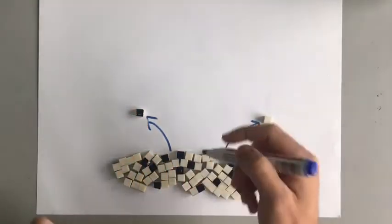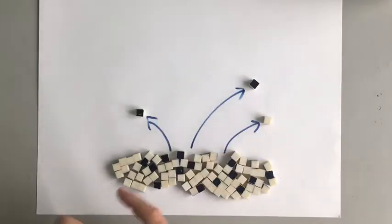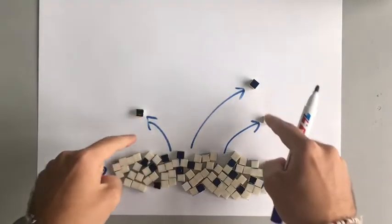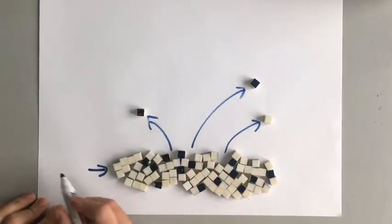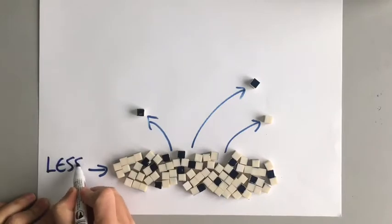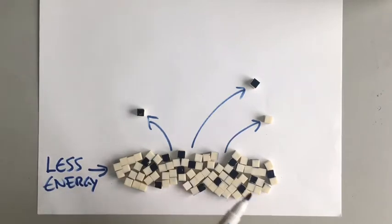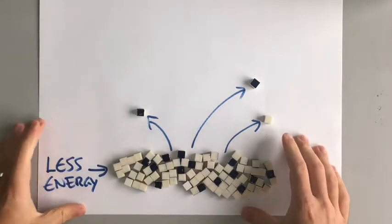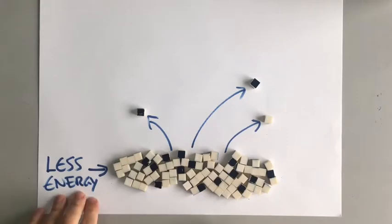If we lose, and continue to lose by evaporation, the particles with the most energy, then the average amount of energy in the liquid is going to decrease. We're losing the particles with the most energy, and all we're left with are the particles with less energy. So the average amount of energy is less. It's hard to imagine energy on its own, but if we think of it as temperature, then less energy means a lower temperature.